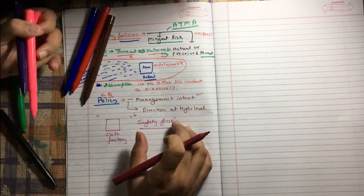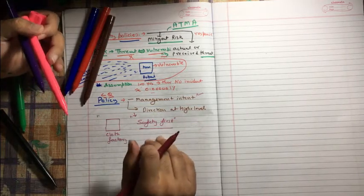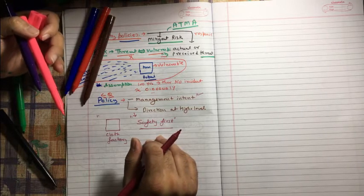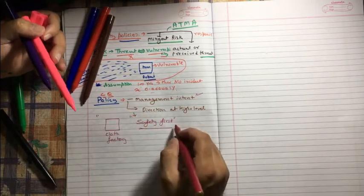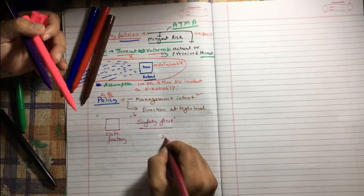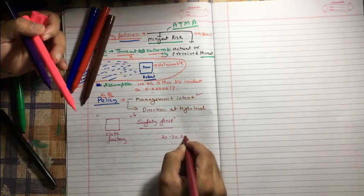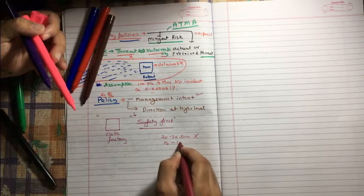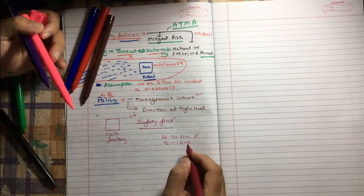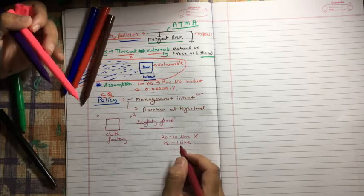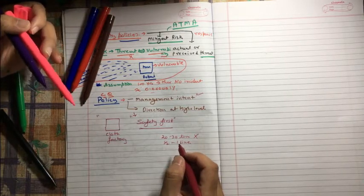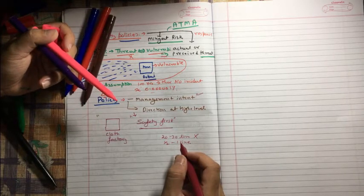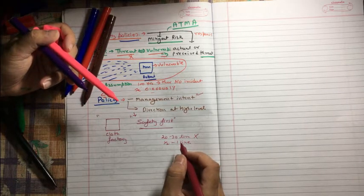So safety first is the high-level intent of management. And also you need to understand this policy should not be a 20 to 30 line description. No, it's always half to one line - very short detail we must have in policy.